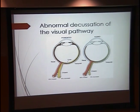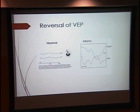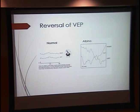A really important finding, familiar to us because of Dr. Creel, is the abnormal decussation of the visual pathway. In pigmented individuals, you get 55-45% crossing, whereas in individuals with albinism, you get upwards of 90% crossing. This can cause a lot of problems with stereo vision. A good way to visualize and confirm this is with a VEP — you can see what happens with individuals with albinism: you get this reversal of the pathways.